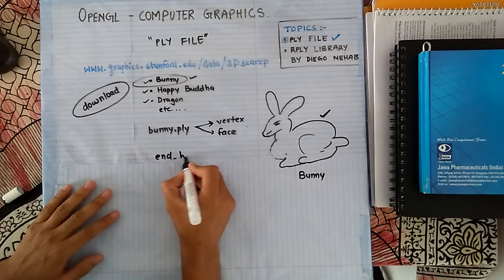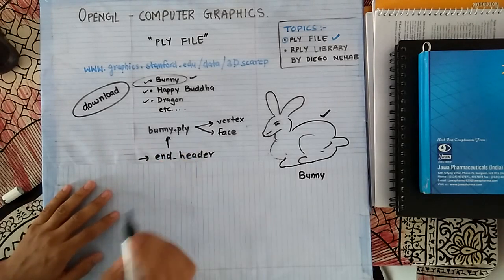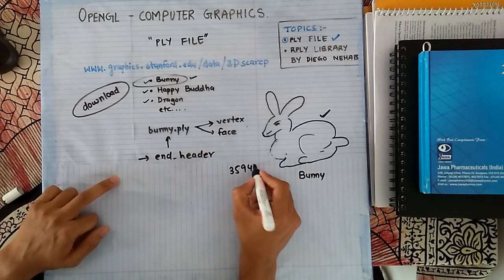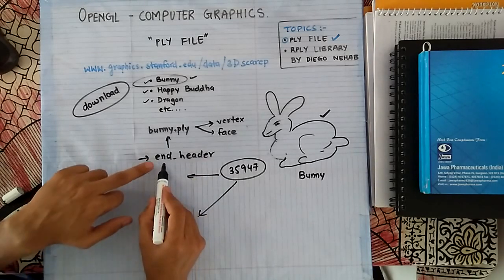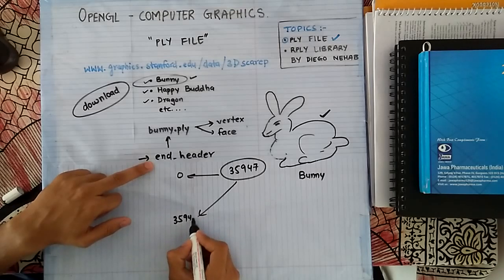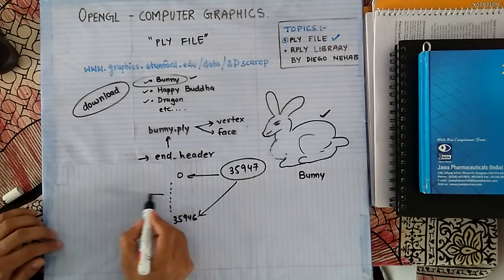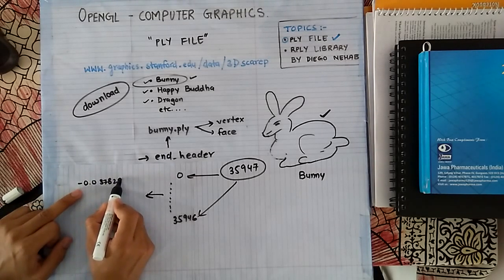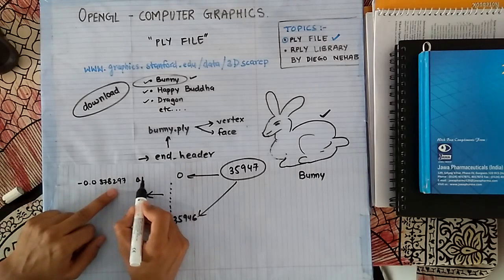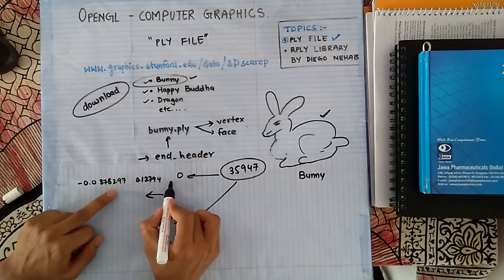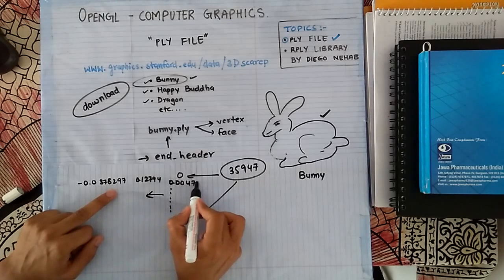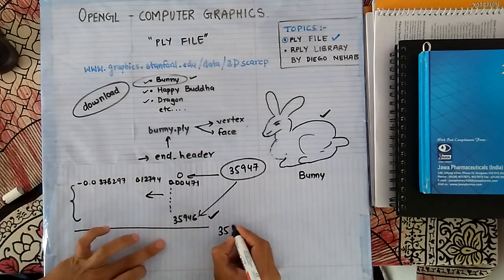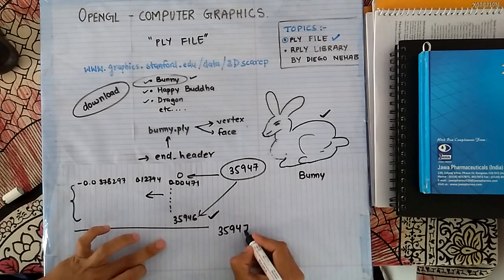After the end_header line in bunny.ply, you will see vertices starting. As already defined, 35,947 vertices are used, so from after end_header up to line 35,947 you will see all the vertices. If you observe properly, these vertices are in very small values — for example, minus 0.0378297 as the x coordinate, then 0.12794 as y, and z might be 0.0471 — such kinds of values.